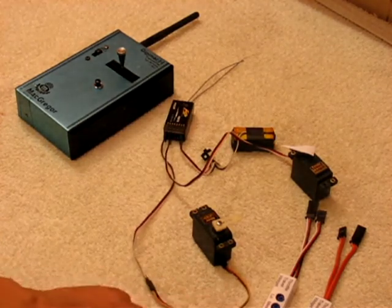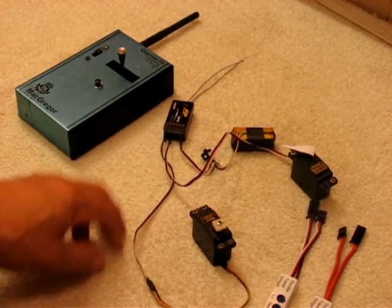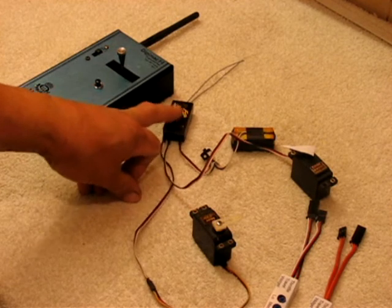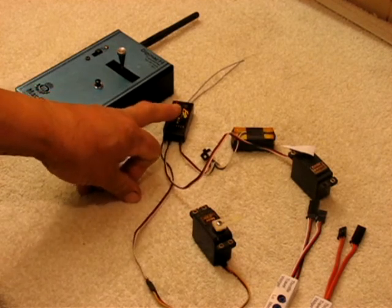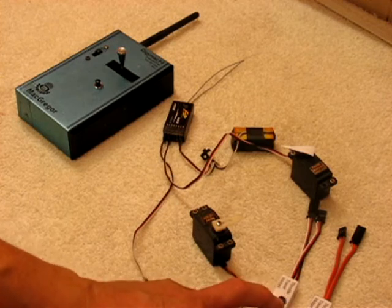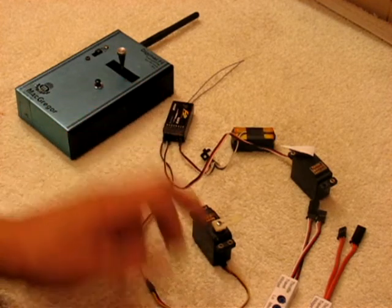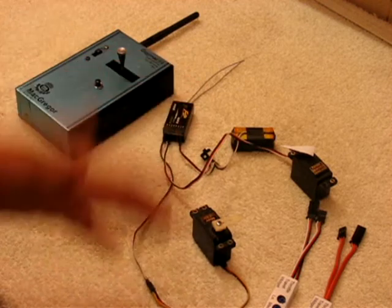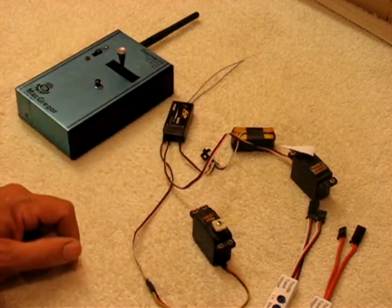Two things. What was the other thing? Oh, the other thing is failsafe. It simply passes on whatever failsafe you've set on your receiver. If you set it to no pulses, it sends out no pulses on failsafe. If you set it to low throttle, it goes to low throttle. It just mimics whatever it sees from the receiver.